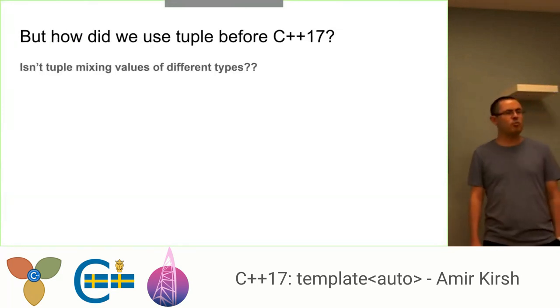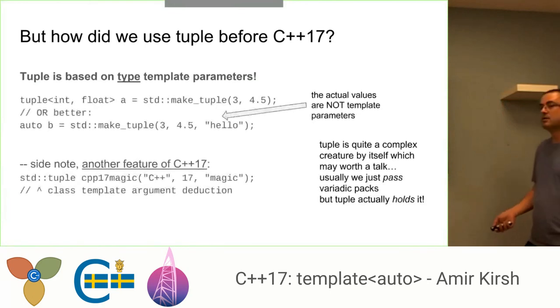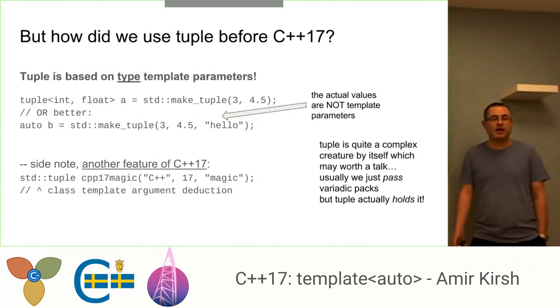But how did tuple work before that? Didn't we have a problem with tuple before the template auto? Well, the answer is no, we don't, because tuple is not non-type parameter based. It's the type, and the type can be different. So if you take a look at tuple, tuple takes the actual values in runtime as function parameters, or as constructor parameters. There is something nice in C++17. You don't have to use make_tuple. You can just call the constructor, send the actual parameters that you want, and rely on class template argument deduction. We'll not talk about that right now.